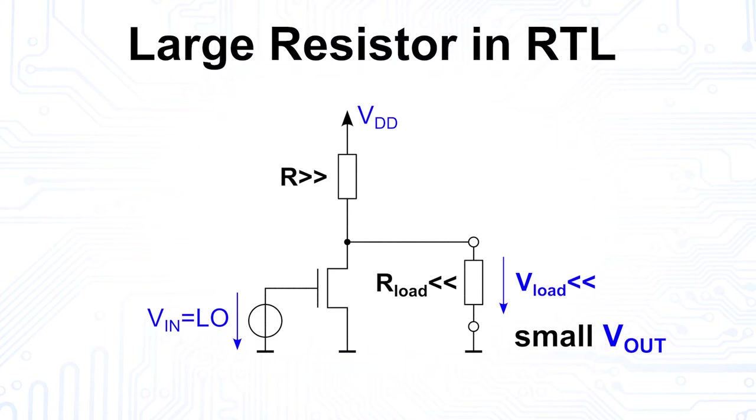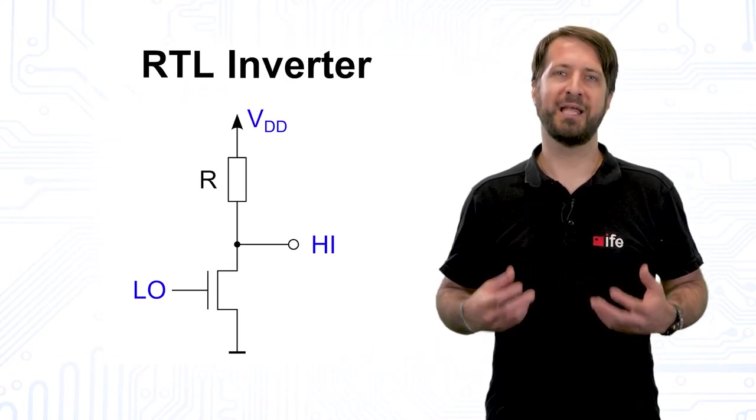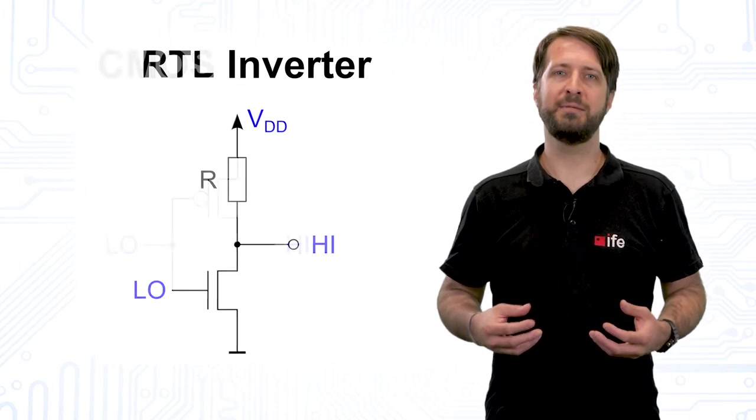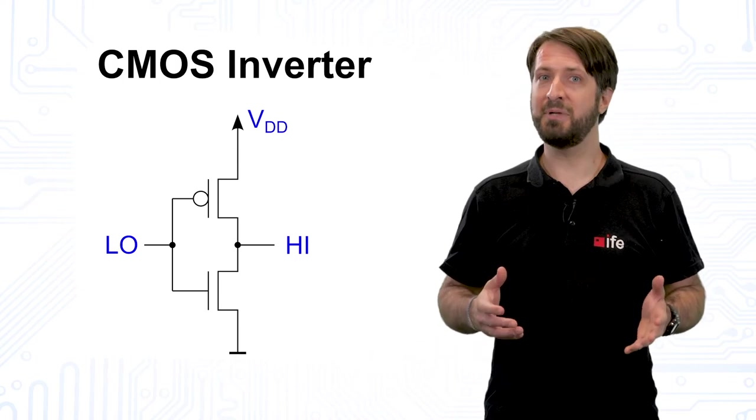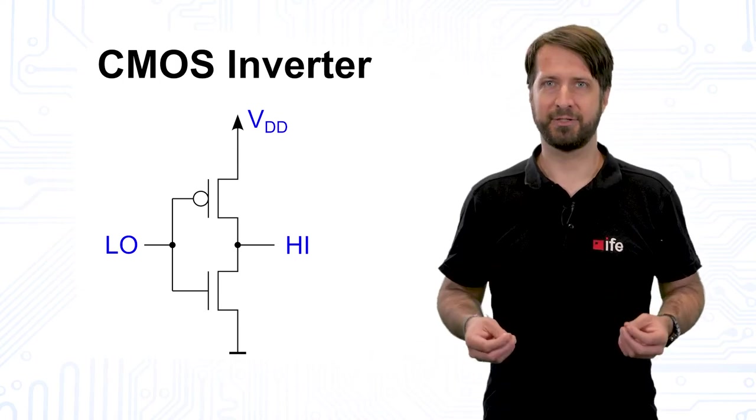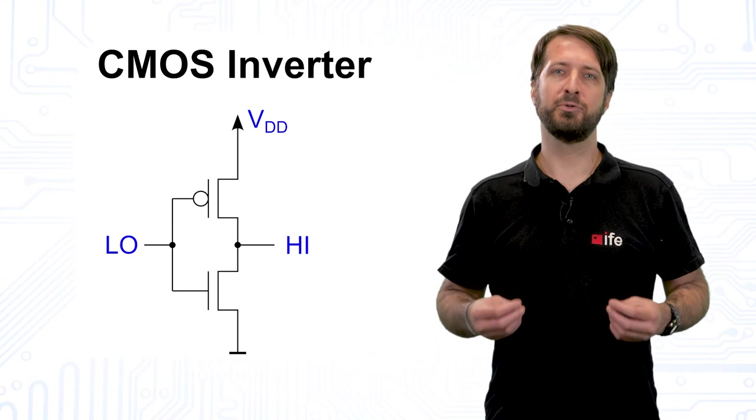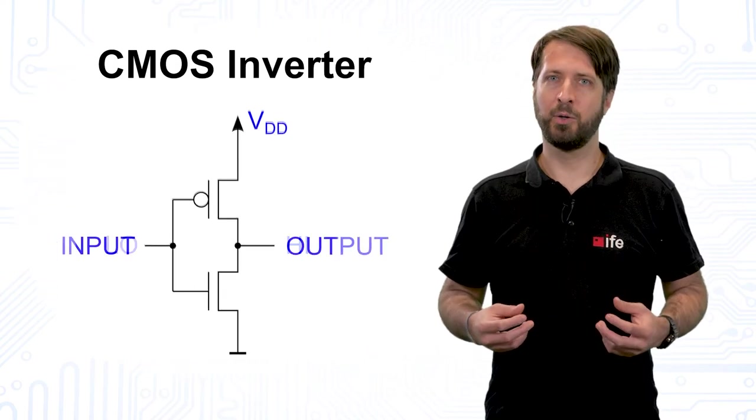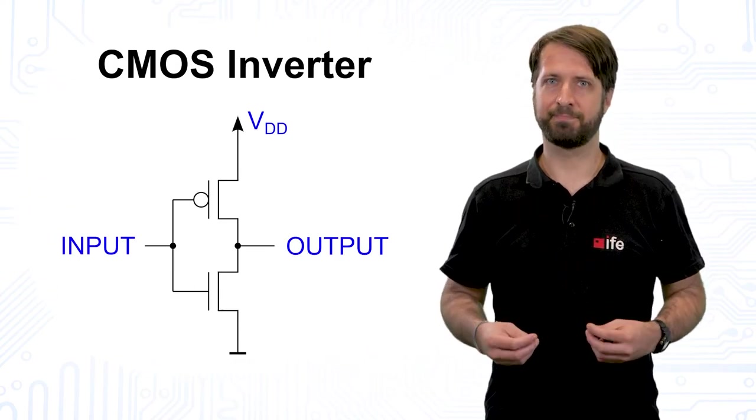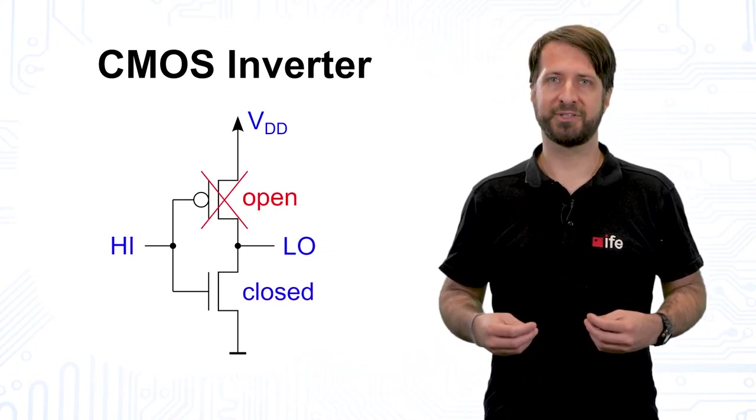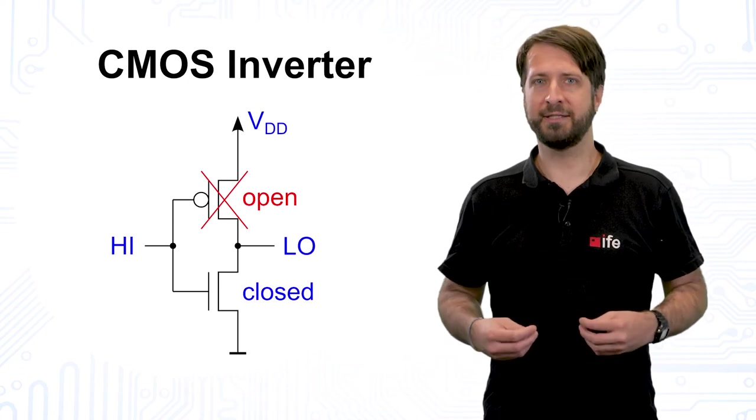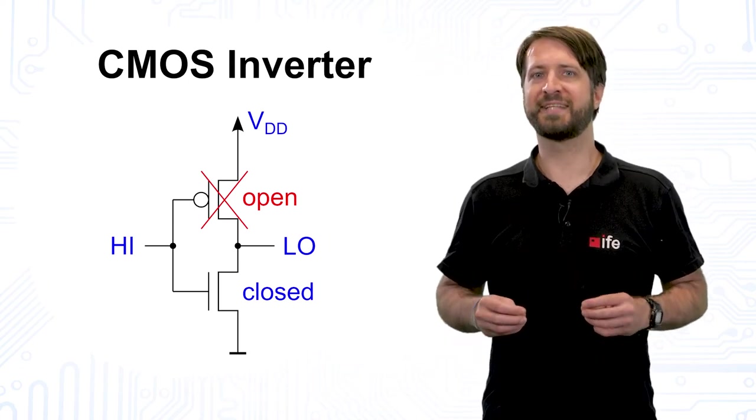CMOS provides the solution for all these problems by replacing the resistor with a PMOS that complements the NMOS. Hence, complementary metal oxide semiconductor. If the gates of the two transistors are connected, we get a CMOS inverter. If we apply a high level at the input of the inverter, the NMOS closes again, but the PMOS will stay open.